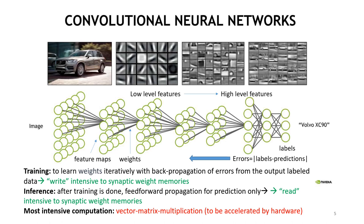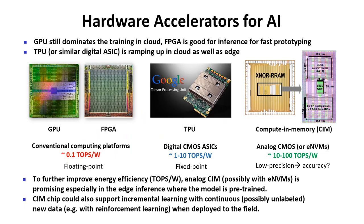As you can see, training will be write-intensive operations to the synaptic memory, and inference will be read-intensive to the synaptic weight memory. After all, the most intensive computation in both training and inference will be the vector-matrix multiplication, and that is the task we are going to accelerate by the hardware.